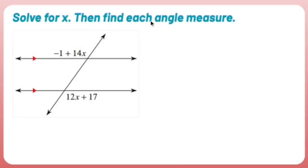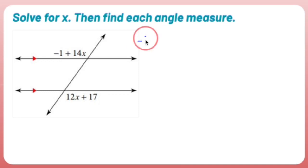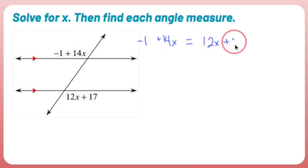Solve for x, then find each angle measure. We have parallel lines. We have an angle on the very top left and an angle on the very bottom right. These two angles are called alternate exterior angles. When given parallel lines, alternate exterior angles are congruent, which means negative one plus 14x equals 12x plus 17.